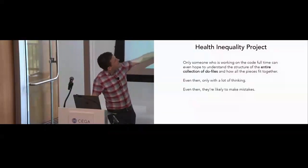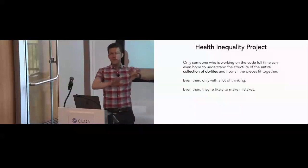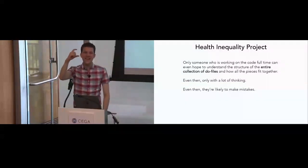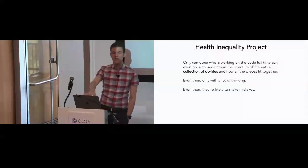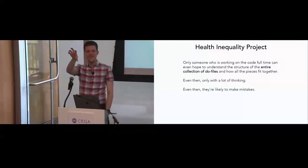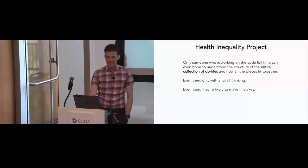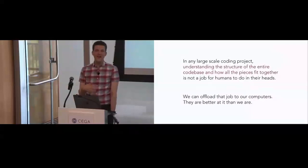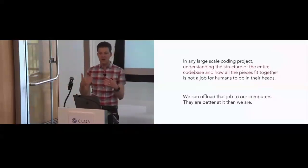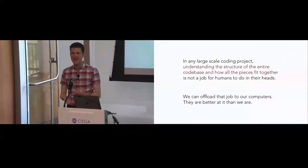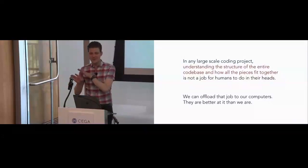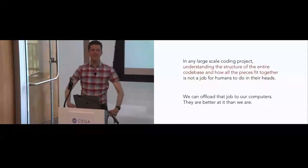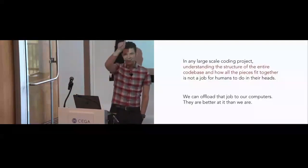The exact same problem arises even after we've made progress from a 4,900-line file to modular pieces. Only someone working on the code full-time can hope to understand the entire collection of do files and how pieces fit together — and even then, likely to make mistakes. My claim to collaborators is that in any large-scale coding project, understanding the structure of the entire codebase is not something we should try to do in our heads. We can give that job to computers — replace that part of our job with automation and be happy about it, spending our time thinking interesting thoughts about the research.